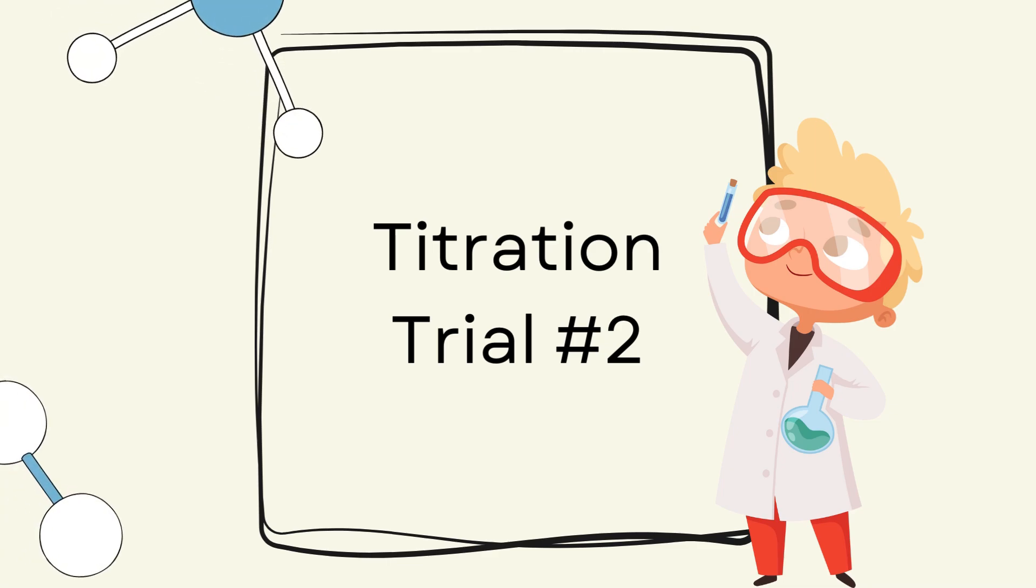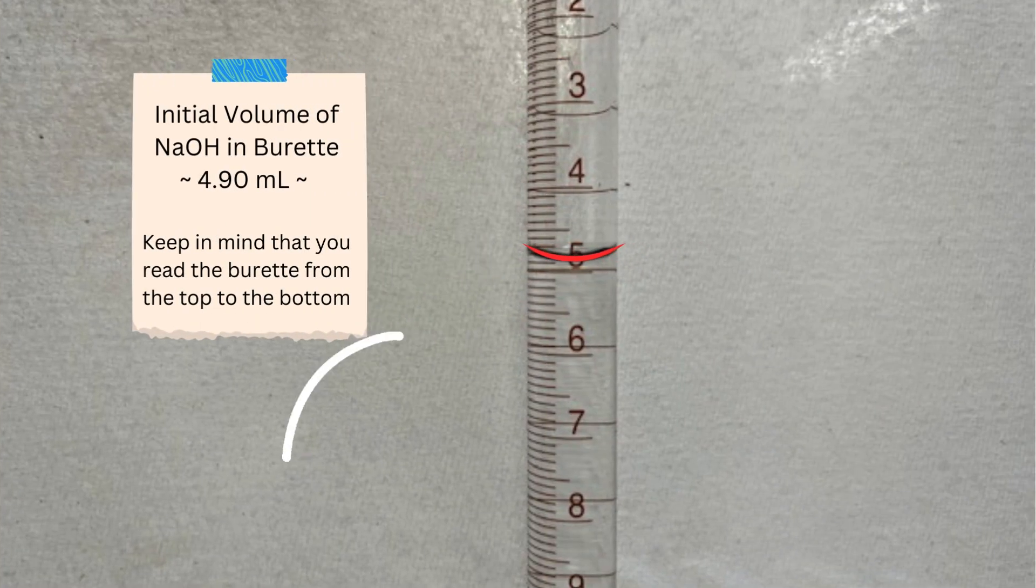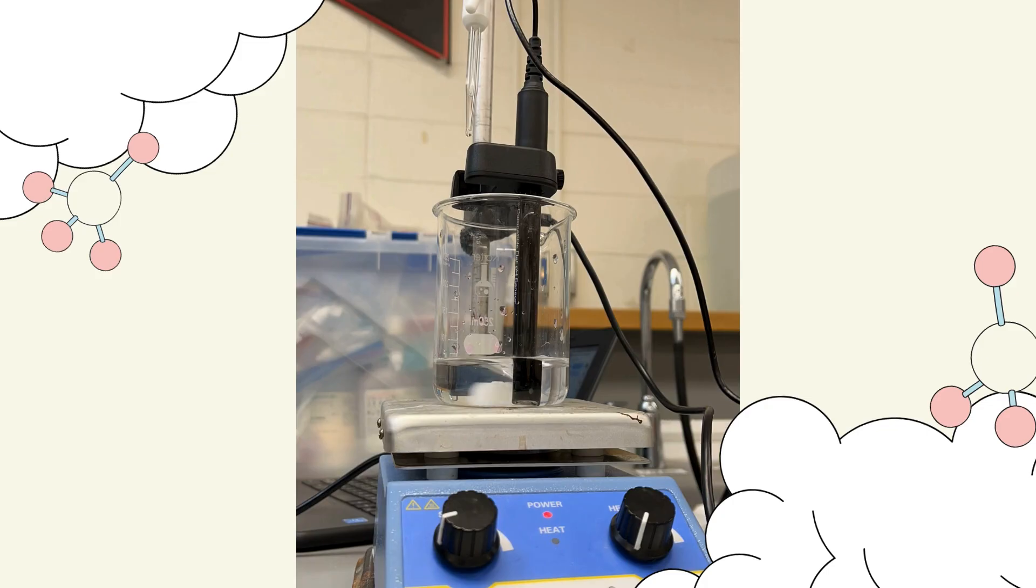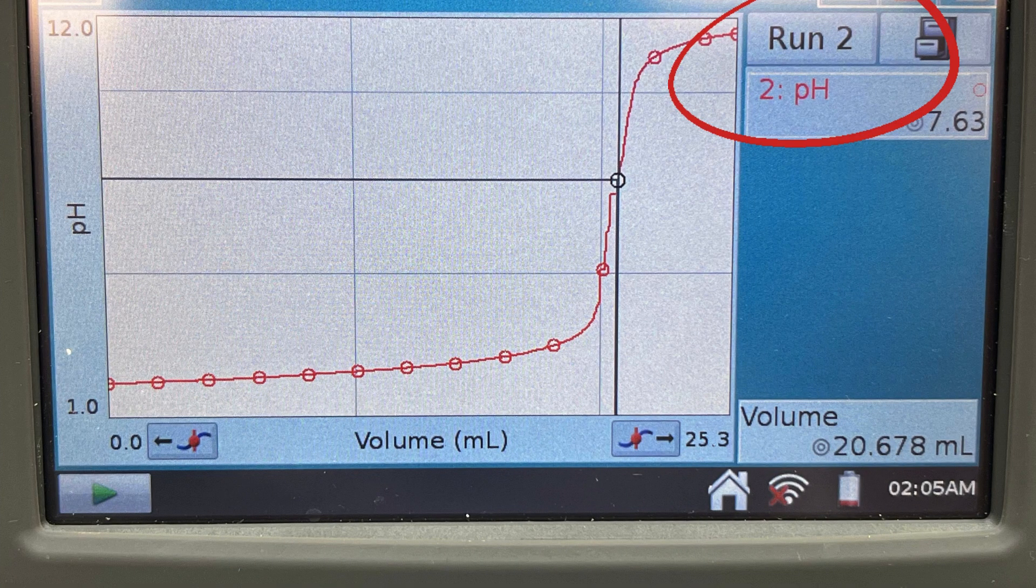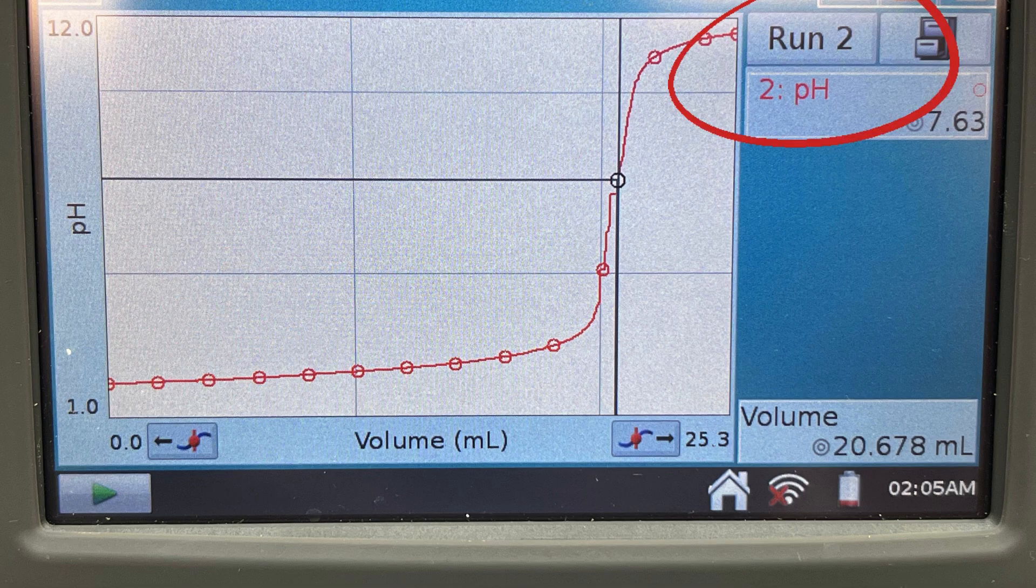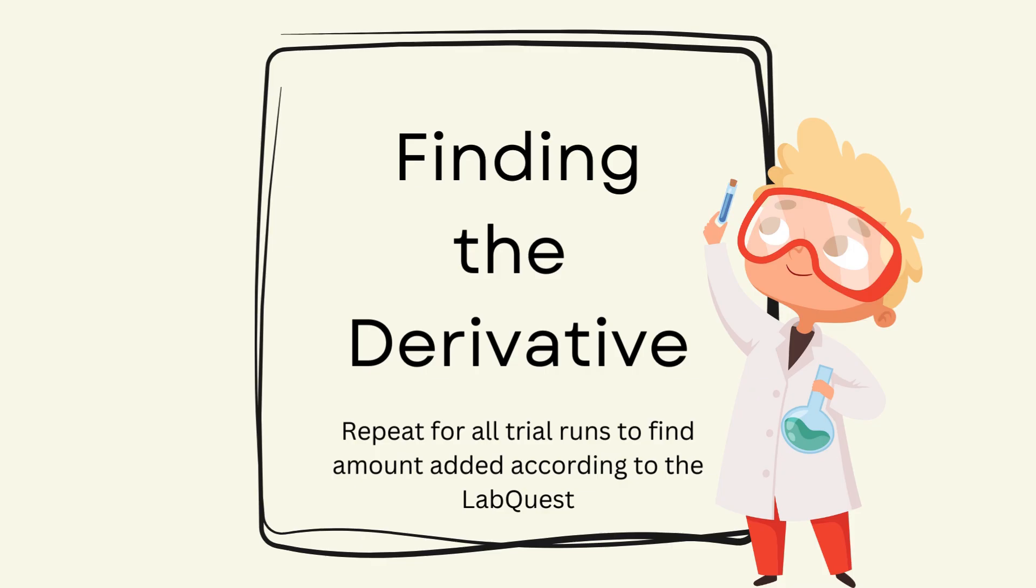Titration trial two. Your graph should resemble similar results with equivalence point being consistent in all trials.